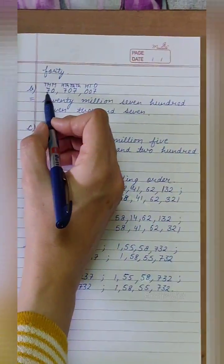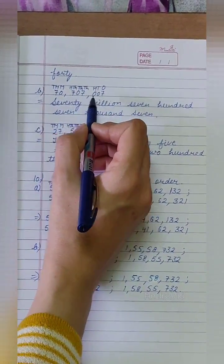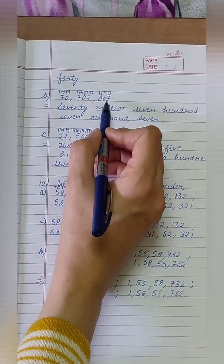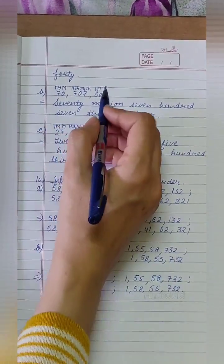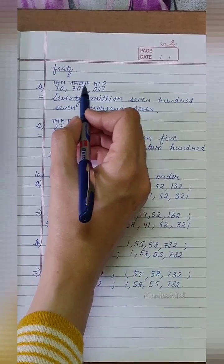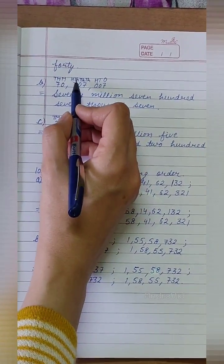Part B is 70707007. Here 1, 10, 100, 1000, 10,000, 100,000, million.